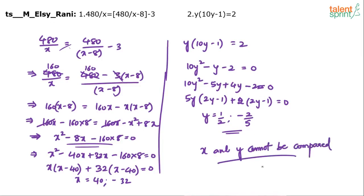You cannot arrive at an answer because all the possibilities are there. x equals to 40 means x is greater than y, but when you take x equals to minus 32, x becomes less than y. In this case, you compare 40 with 1 by 2, so 40 is greater than 1 by 2. You compare minus 32 with 1 by 2, minus 32 is less than 1 by 2. So x and y cannot be compared.